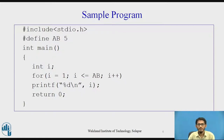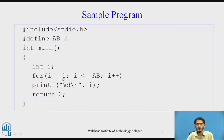Let us take a sample program. In this program you can see the header file included. Then with `#define ab 5` we are defining a macro whose value is initialized to 5. In the main function we have declared a variable i. Then we take a loop in which i is initialized to 1 and i is less than or equal to ab. So here for the macro ab, the value 5 will be replaced. This goes on to print the value of i in every iteration of the loop.